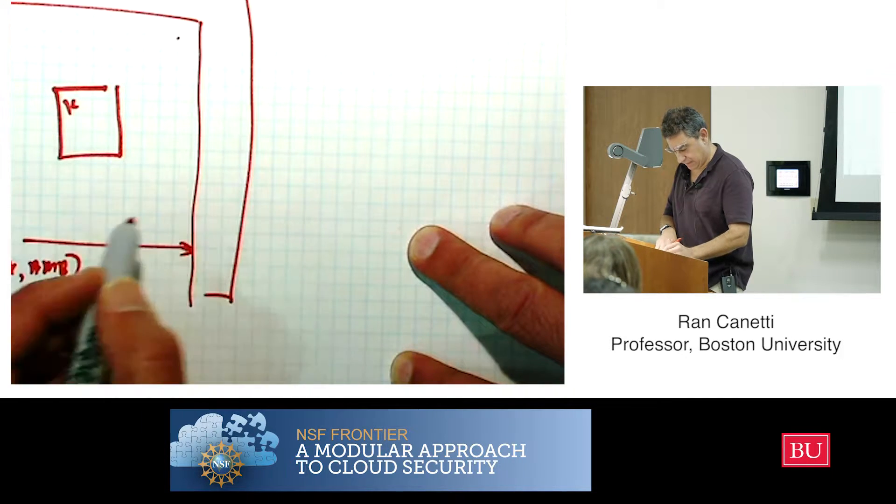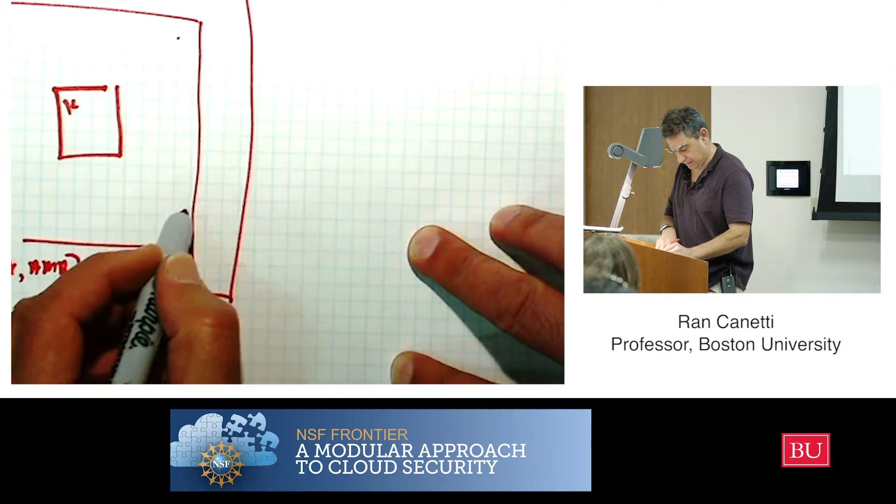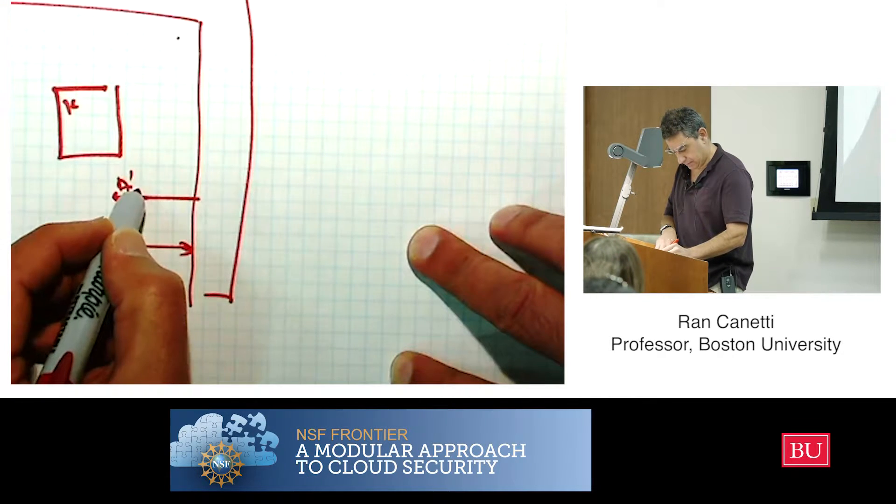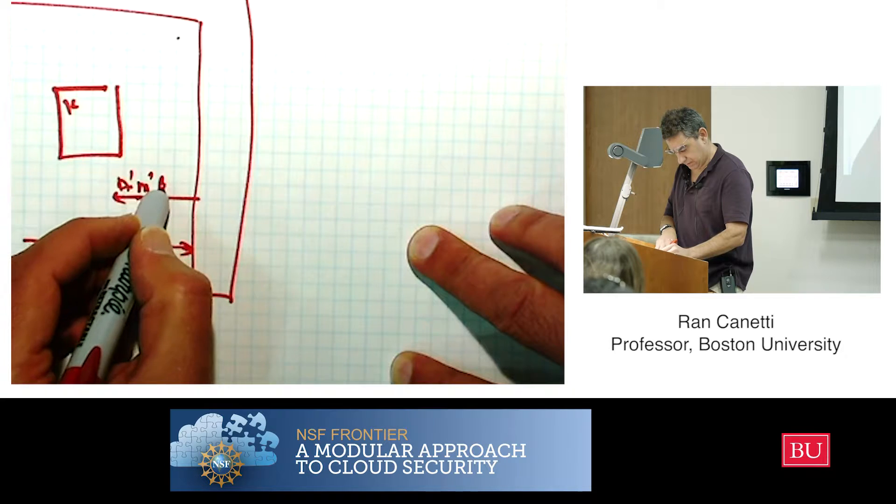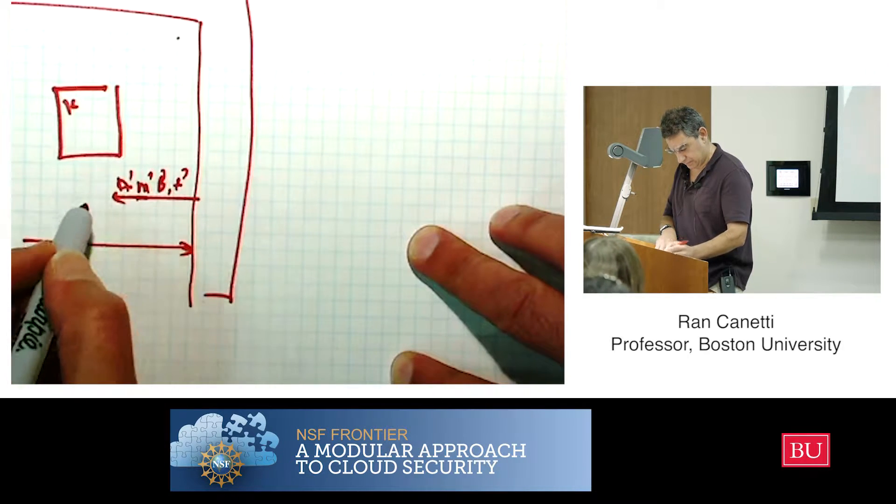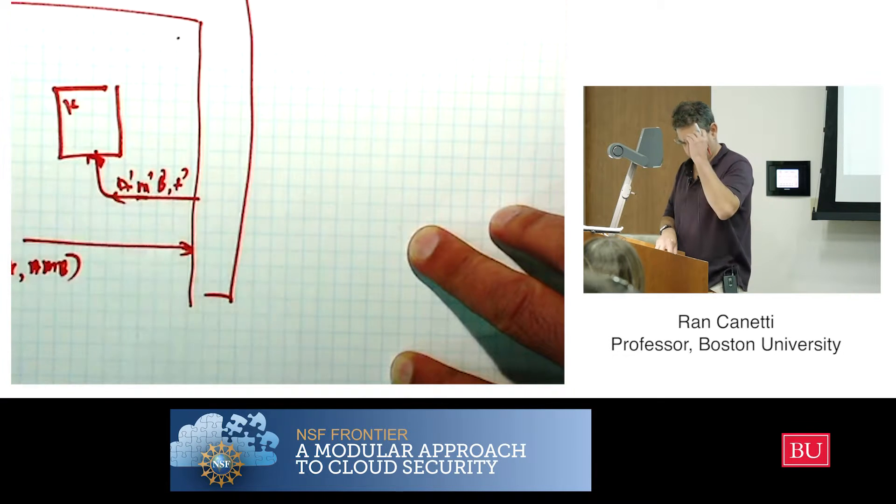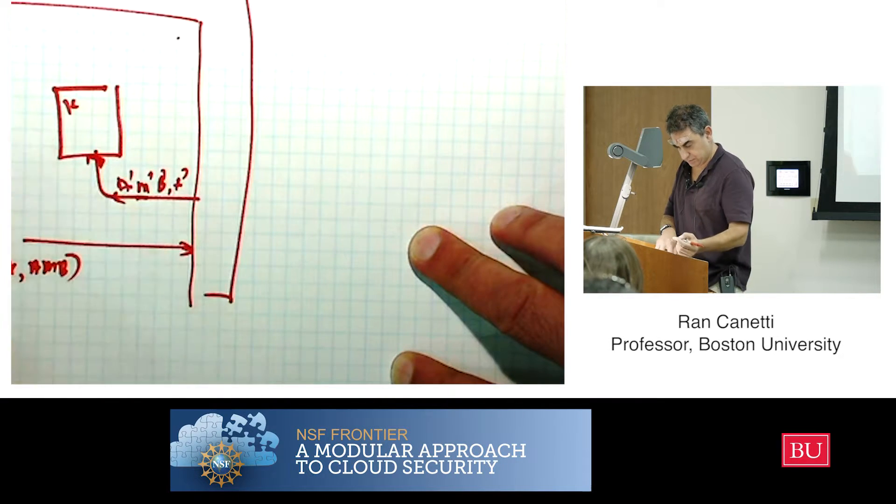And then the environment is outputting some A tag, M tag, B tag, and T tag. And it is sending it to the party B, which has key K, this box here.